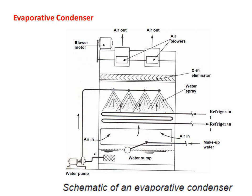The evaporative condenser uses both air and water as the condensing medium to condense the hot vapor refrigerant. These condensers perform the combined function of a water-cooled condenser and a cooling tower. In its operation, water is pumped from the sump — there is a makeup water supply. Air enters from the bottom. This is the refrigerant inlet and this is the refrigerant outlet. Water spray nozzles, a drift eliminator, and air blowers are provided.